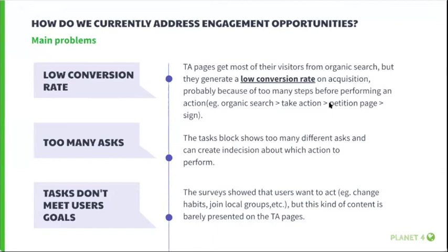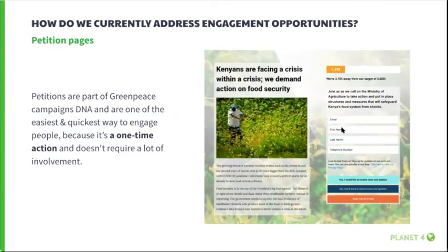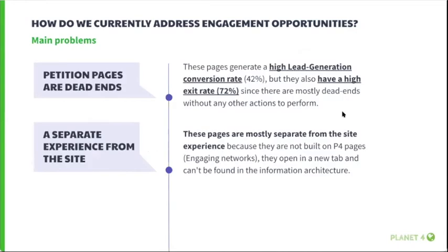Surveys show that users want to act — for instance, change habits, join local groups, and join events — but this kind of content is barely presented on take action pages. Petition pages are part of Greenpeace's campaign DNA — they are the easiest and quickest way to engage people because it's a one-time action and doesn't require a lot of involvement. However, petitions are often dead ends: they generate a high lead generation conversion rate but also have high exit rates of about 72 percent, since they are mostly dead ends without any other actions to perform.